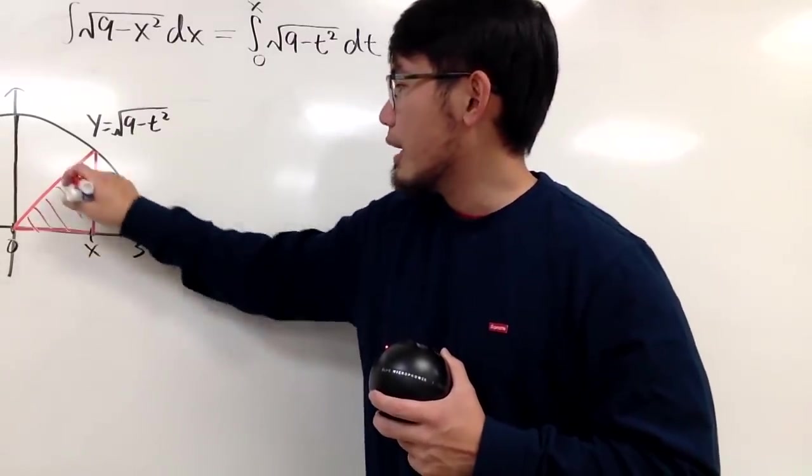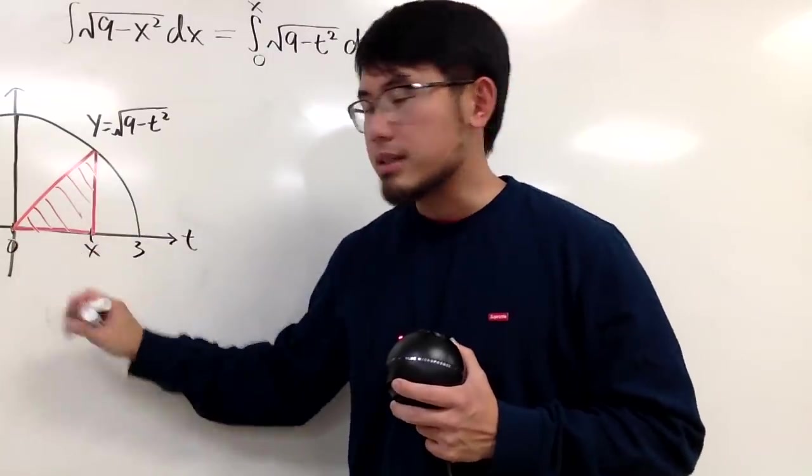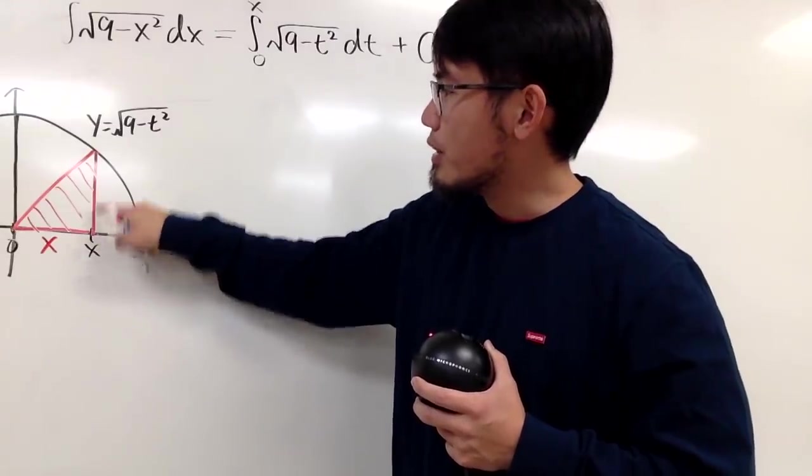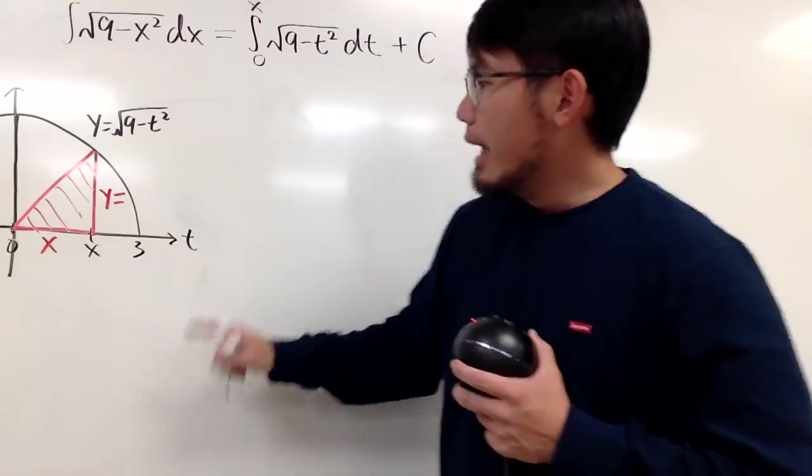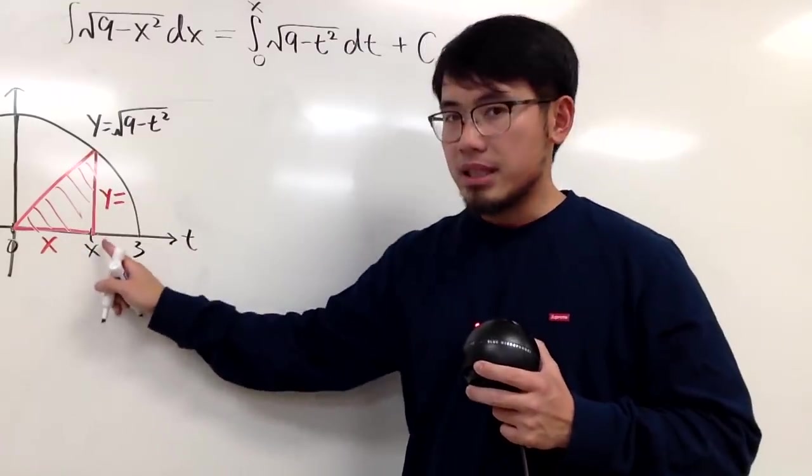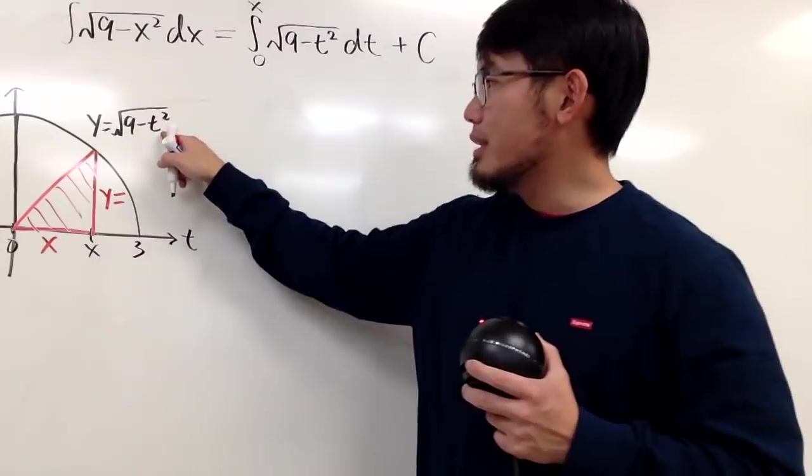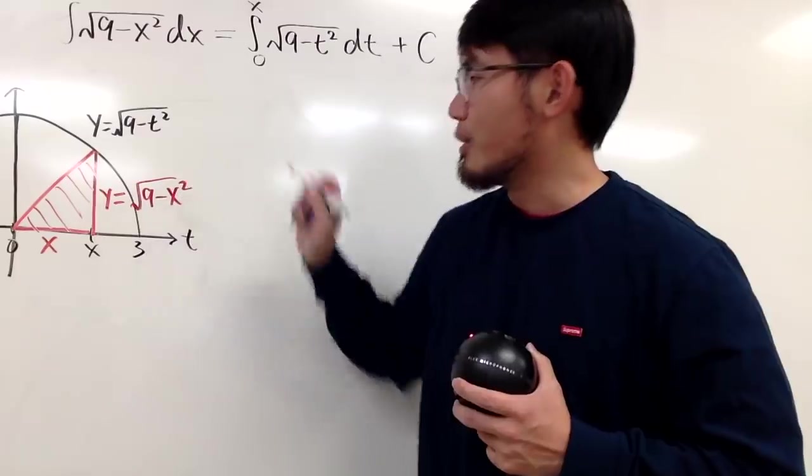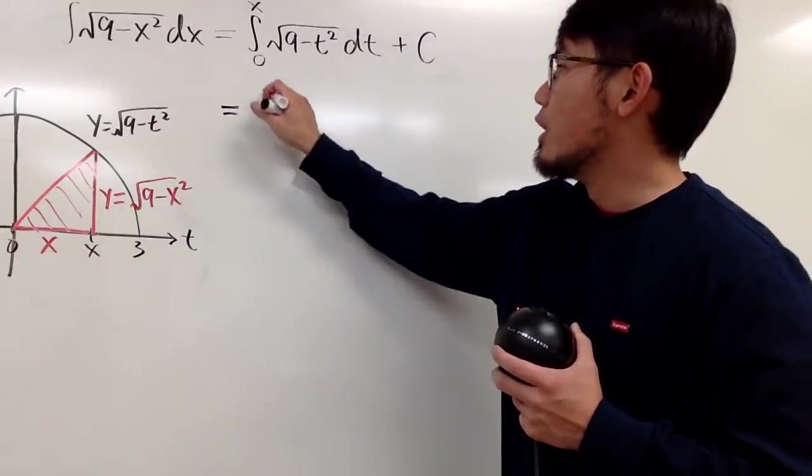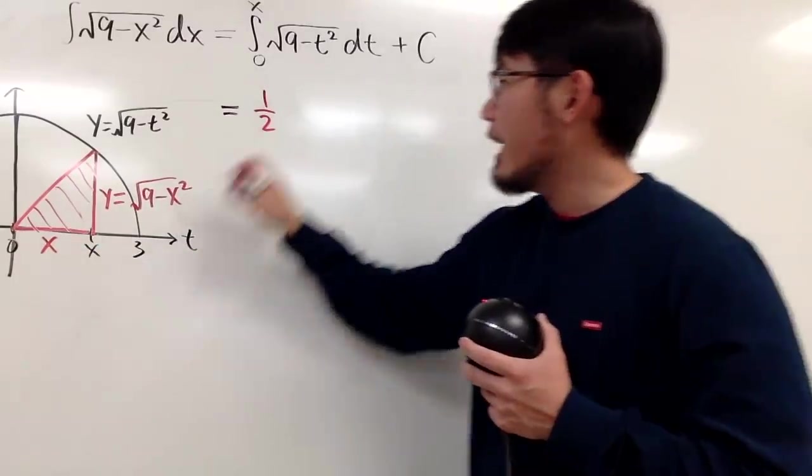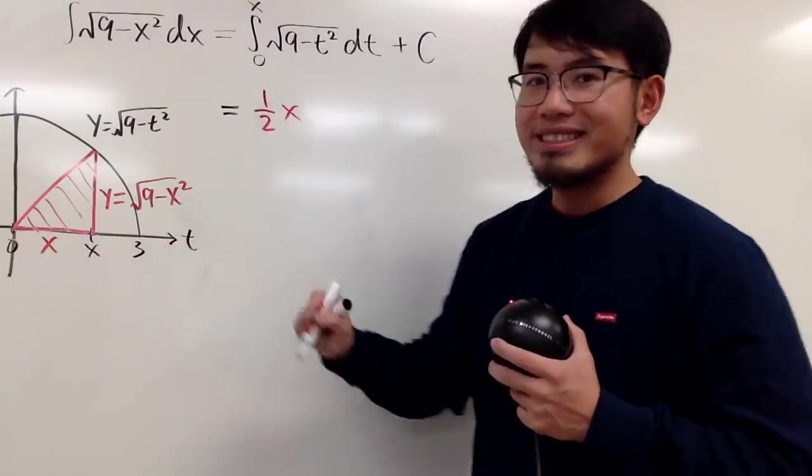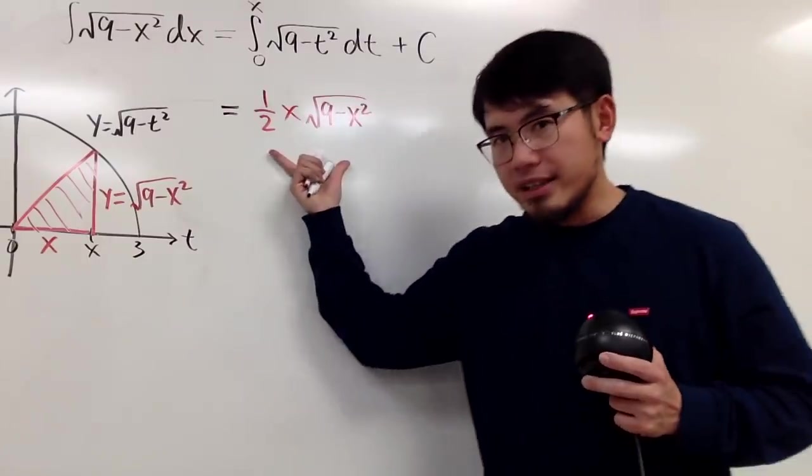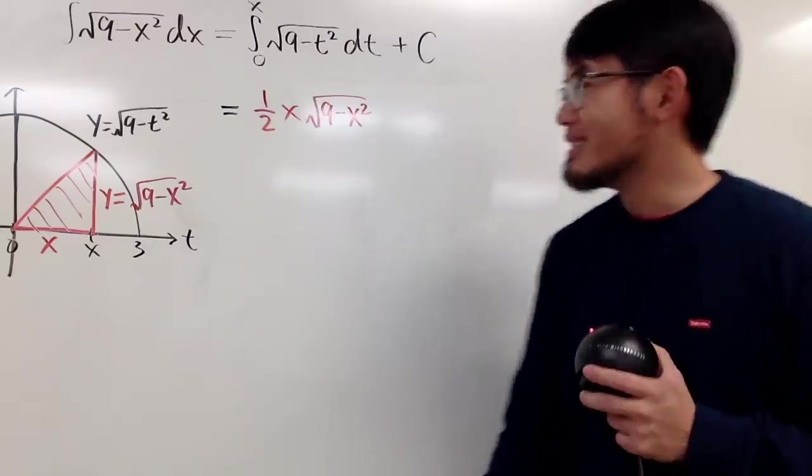So for this triangle, as we all know, the base, you go from 0 to x, so it will be just x. And then the height is just from here to here, and that's the y value. And you will have to plug in this t value, which is x, into this t to get the y value. So we get square root of 9 minus x squared. We need the area of this triangle, which is 1 half times base times height. The base is x, and the height is this. So I will just put down square root of 9 minus x squared. And I think a lot of you guys recognize this part already, don't you? Cool, huh?